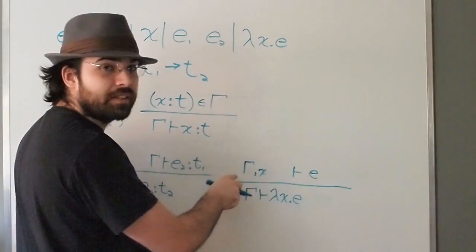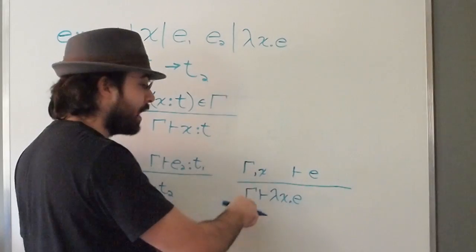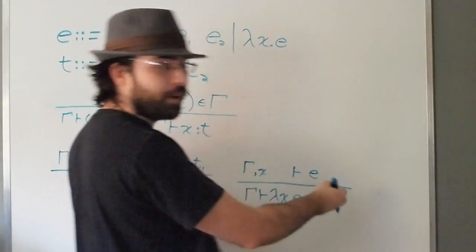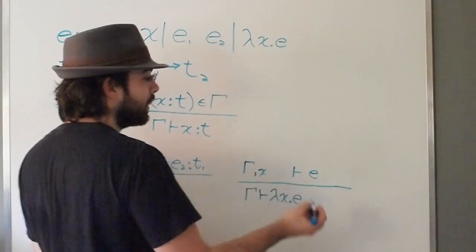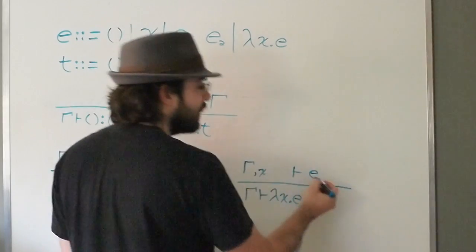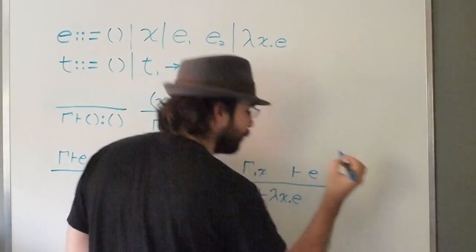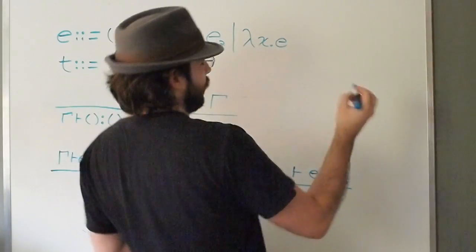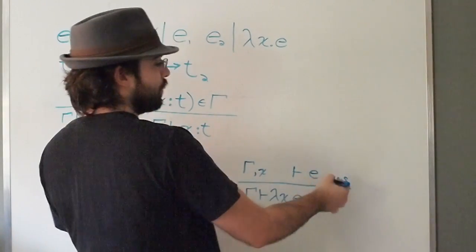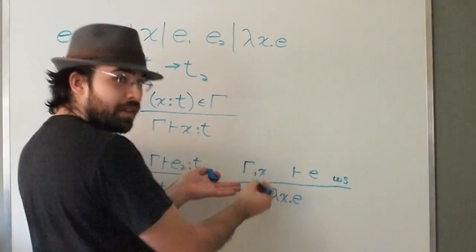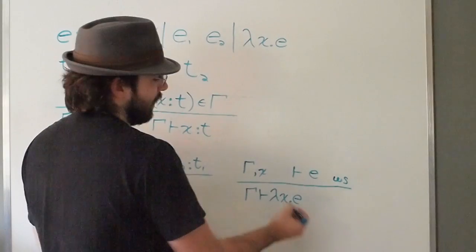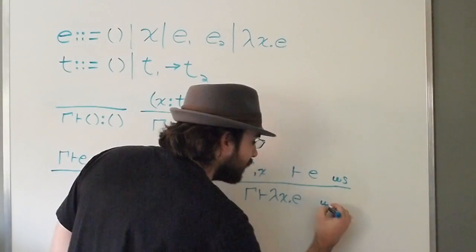Now my context instead of being a pair of a variable and its type is just a list of variable names. Now my judgment is saying that in this context e is well scoped. If the body e is well scoped in the context which is augmented with the x variable, then lambda x e is well scoped in the context without the x variable.